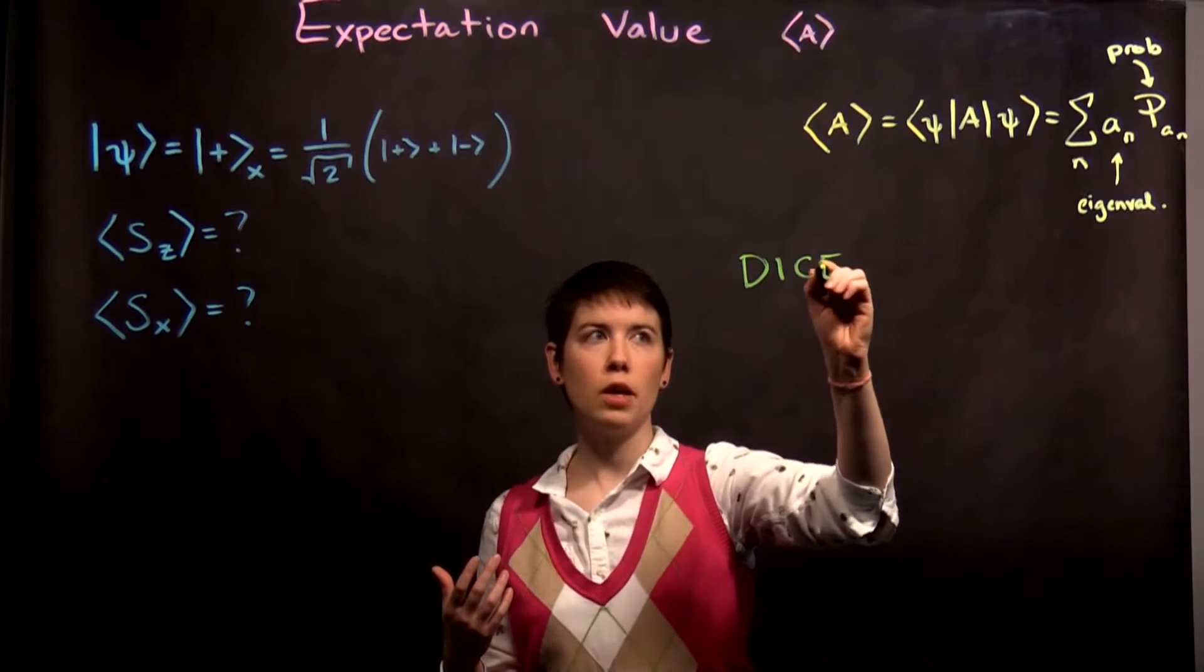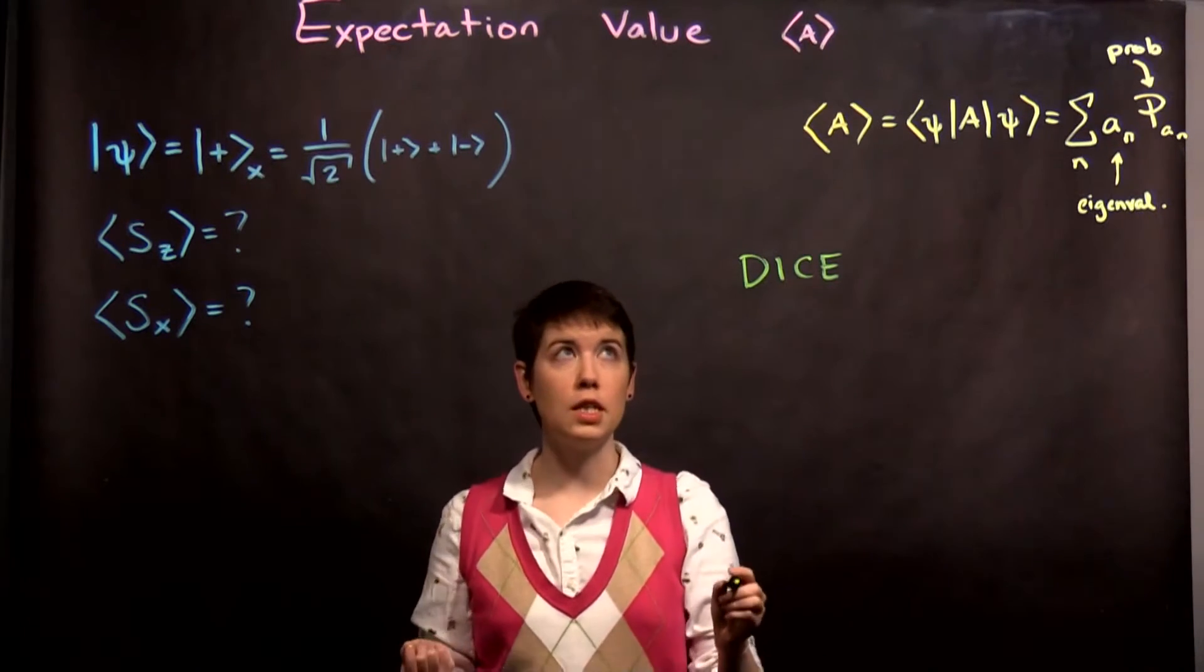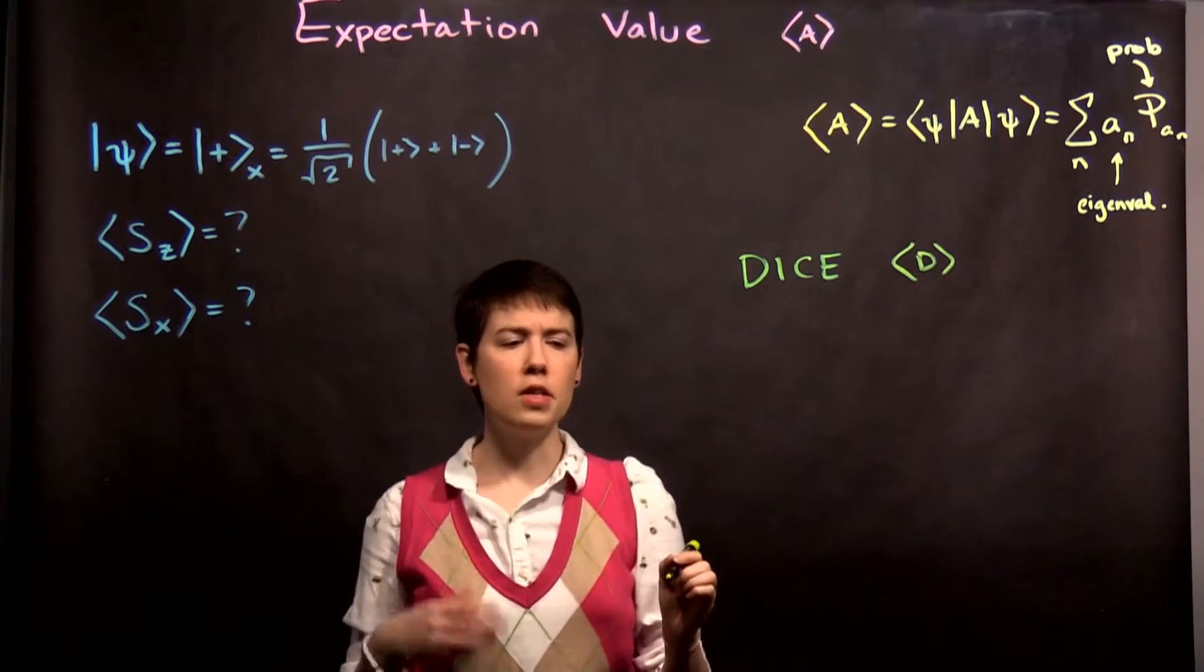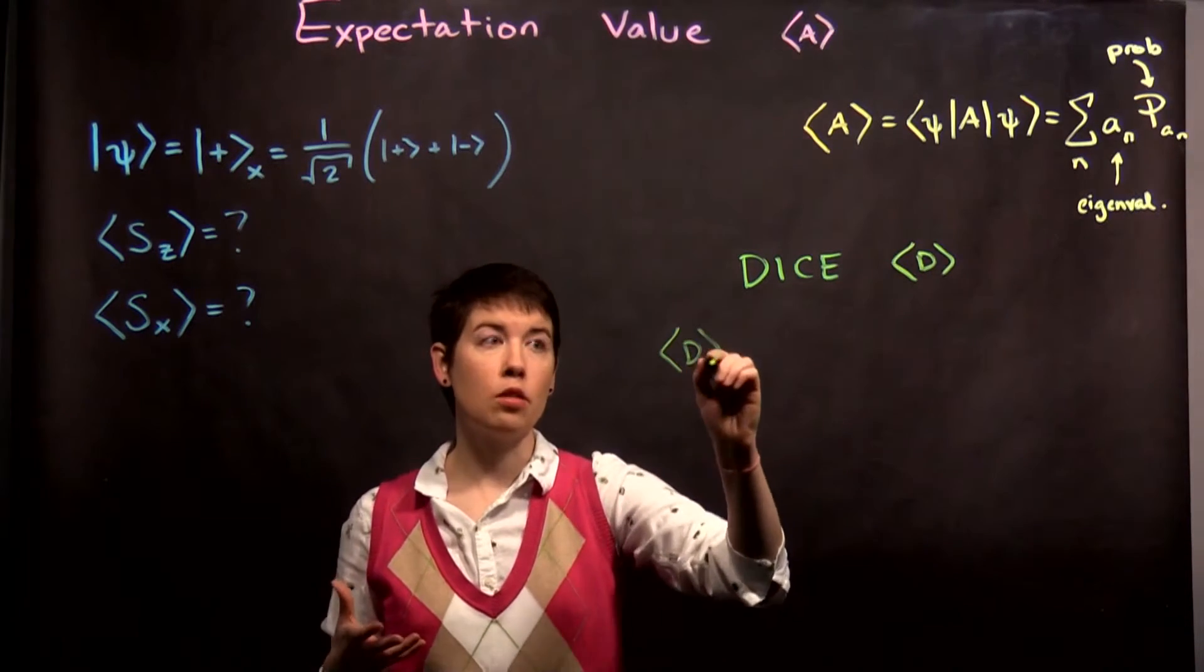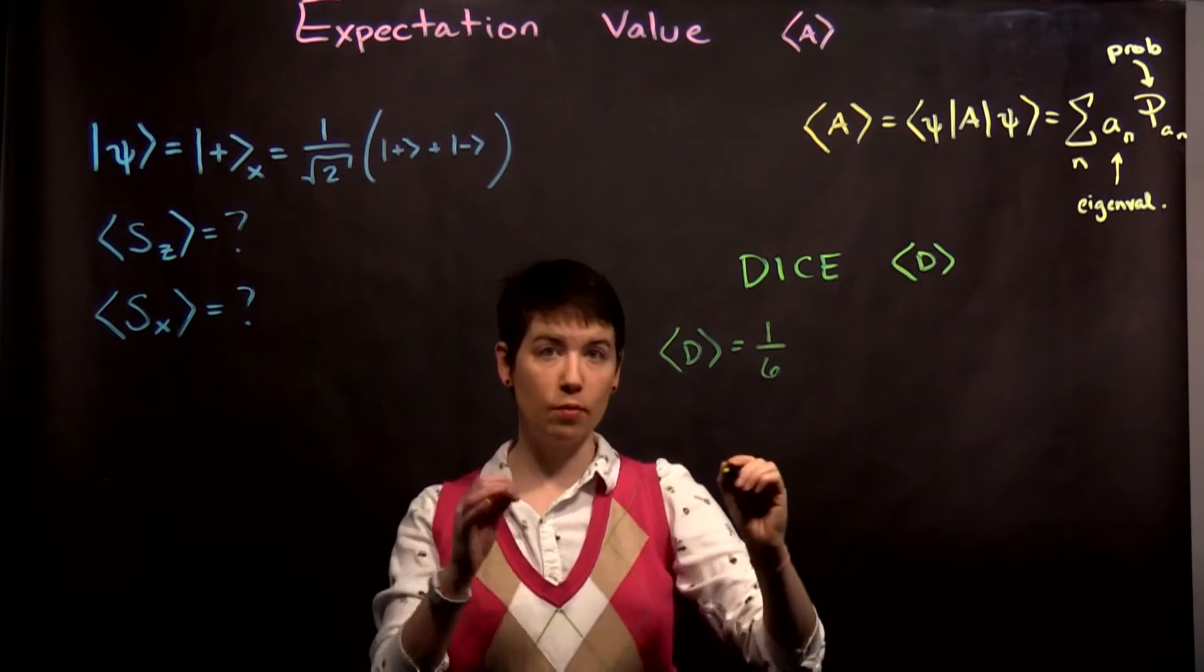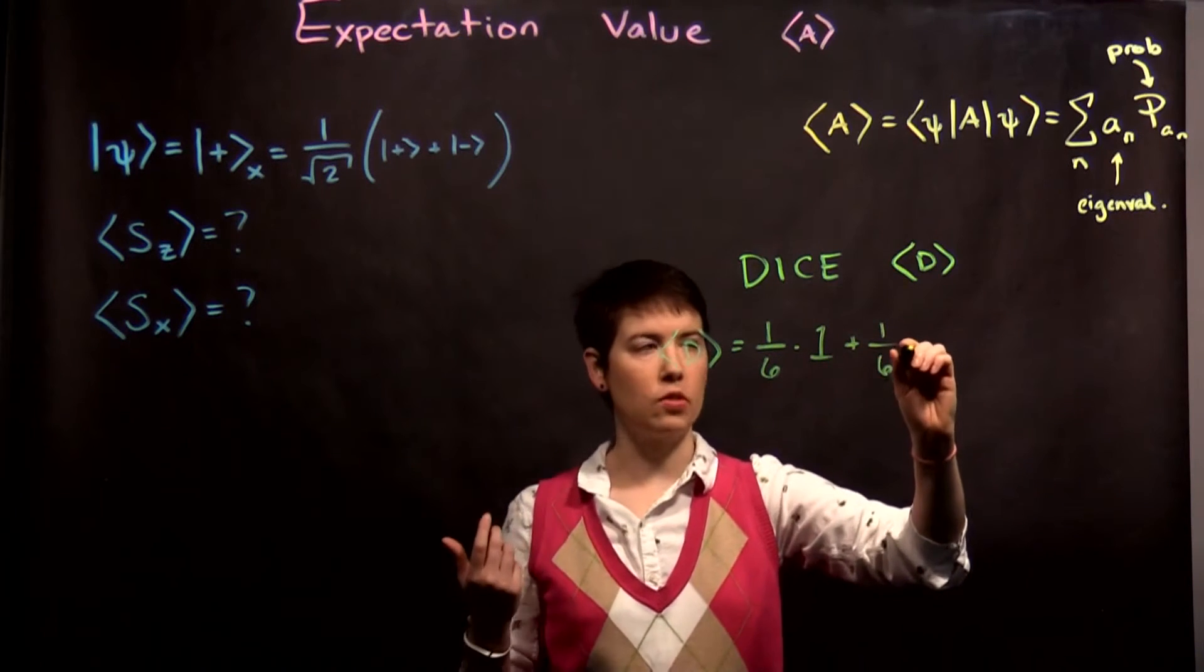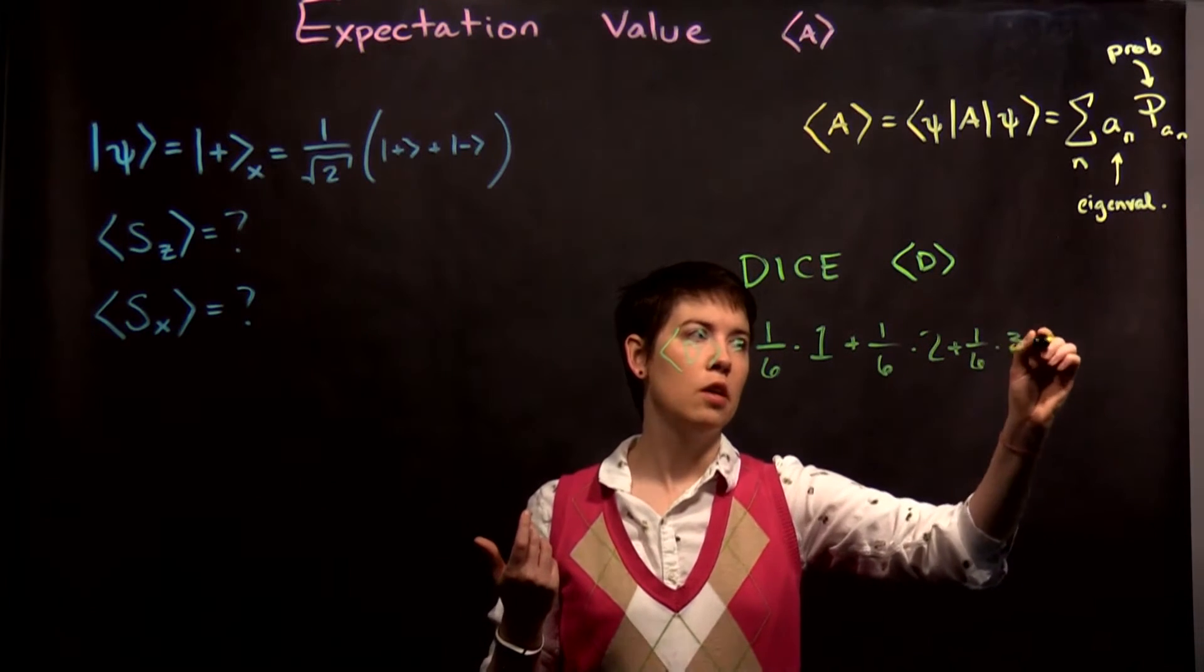If I'm trying to think about my expectation value of rolling a dice, and if I call this d, making that measurement is rolling the dice once. The average value is going to work out to be the probability of each individual value times what that measurement would be. That's just the six sides of a dice. So 1/6 times 1 plus 1/6 times 2, plus 1/6 times 3, and so on.